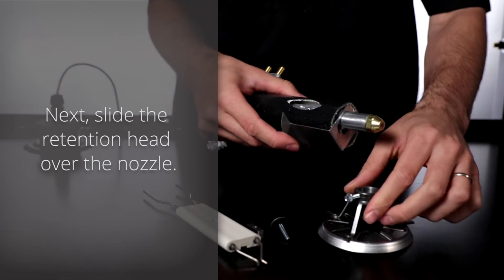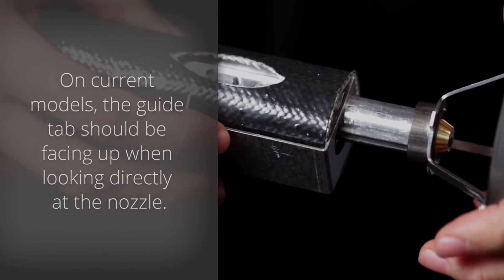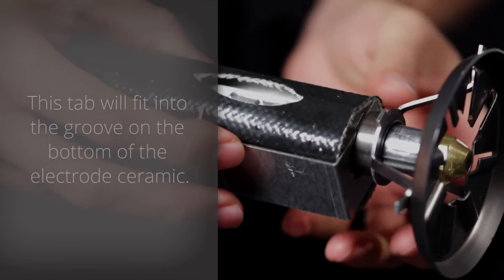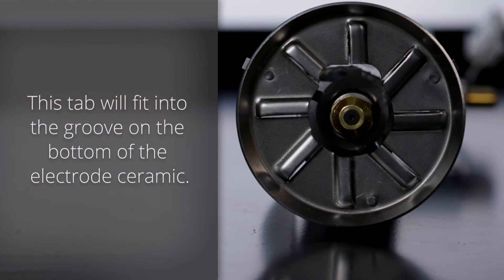Next, slide the retention head over the nozzle. On current models, the guide tab should be facing up when looking directly at the nozzle. This tab will fit into the groove on the bottom of the electrode ceramic.